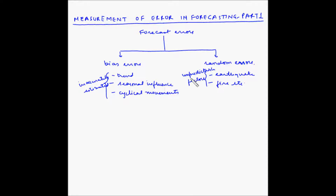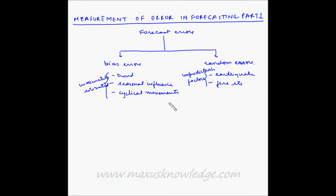Now, though the forecast errors may not be completely eliminated, the demand planner has to try and reduce these errors as much as possible. In order to reduce the errors in the forecast, first we have to be able to measure the errors. So let us look at some of the ways to measure forecasting errors.